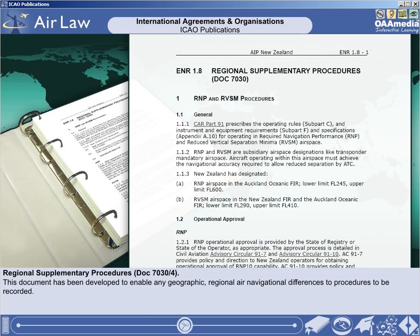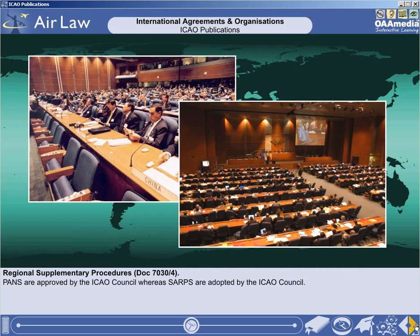And finally, the Regional Supplementary Procedures, Document 7030. This document has been developed to enable any geographic regional air navigational differences to procedures to be recorded. This would normally be done by the ICAO Regional Offices and approved by the Council. It should be noted that PANS are approved by the ICAO Council, whereas SARPs are adopted by the ICAO Council.